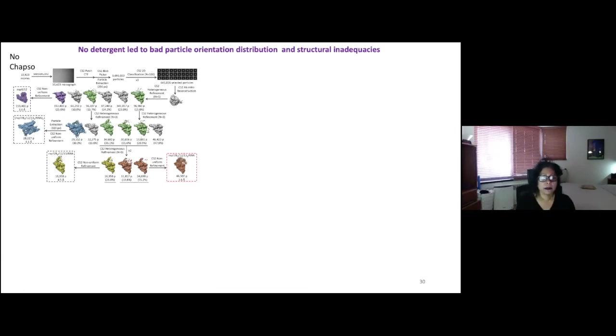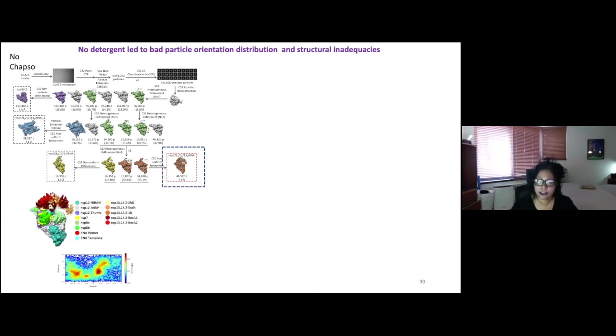I'm going to just mention that for us at least, CHAPSO was really important when you collect the data without the detergent. Although you had a really nice final resolution, the maps were not that great, especially around the helicase. You can see right around the orange and the red that it's very disordered.